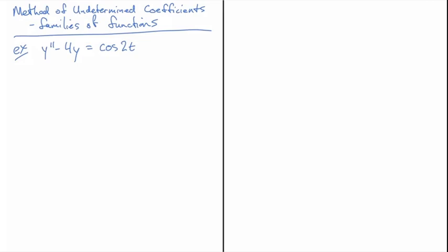So let's consider the example here, y double prime minus 4y equals cos of 2t. Now I won't go through the solution of the homogeneous equation, I'll leave that to you to do as an exercise. Let's just jump straight to an ansatz motivated by what we did in previous examples so far.